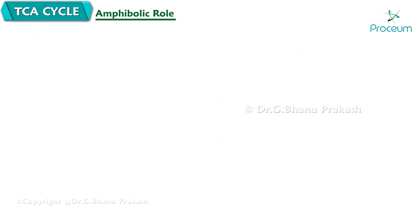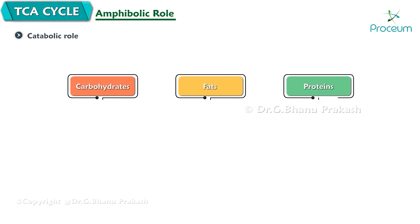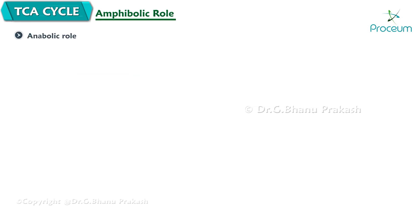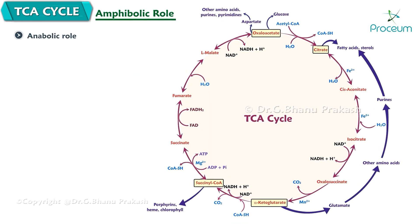Amphibolic role of TCA. The catabolic role is that macromolecules finally form acetyl coenzyme A, which enters the TCA cycle. The anabolic role of TCA is that many intermediates of the citric acid cycle synthesize important compounds.